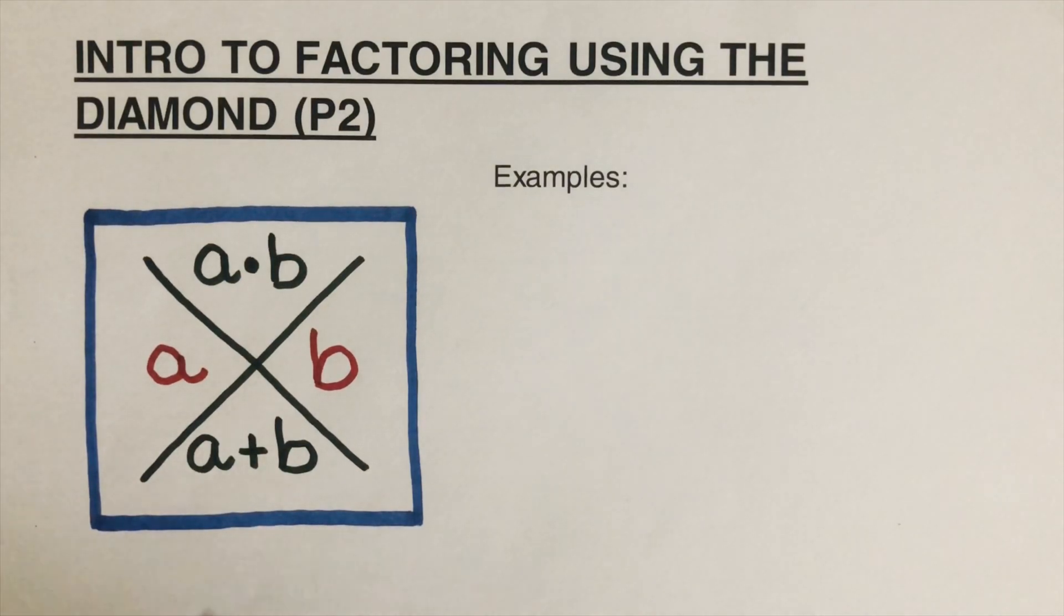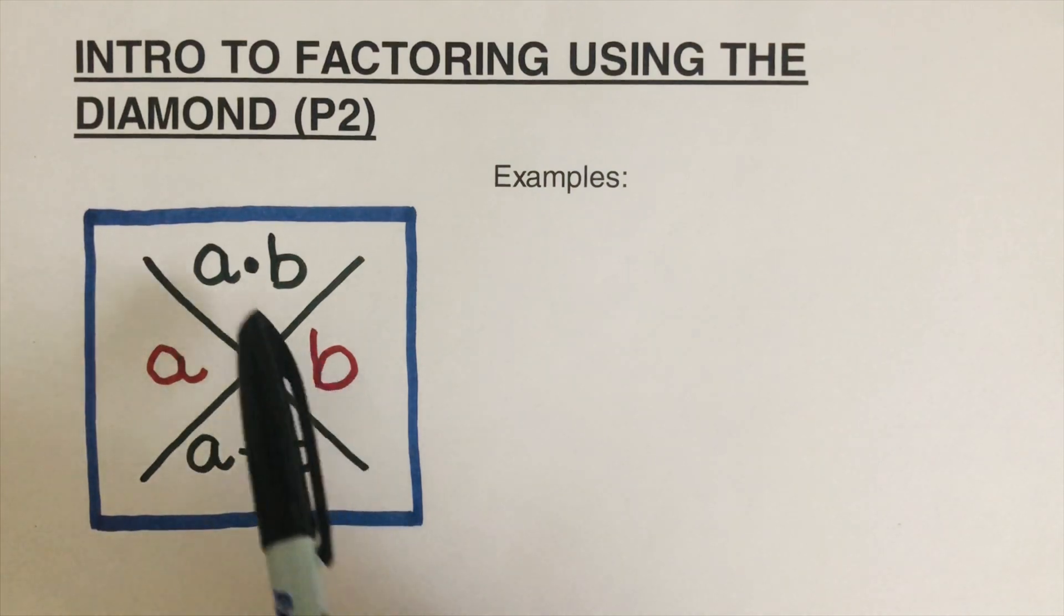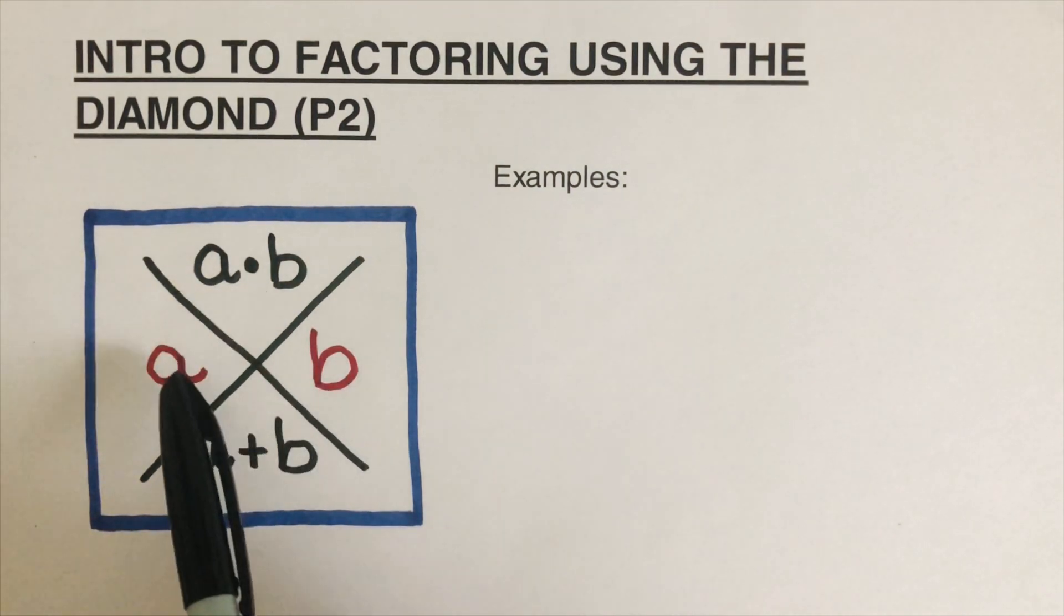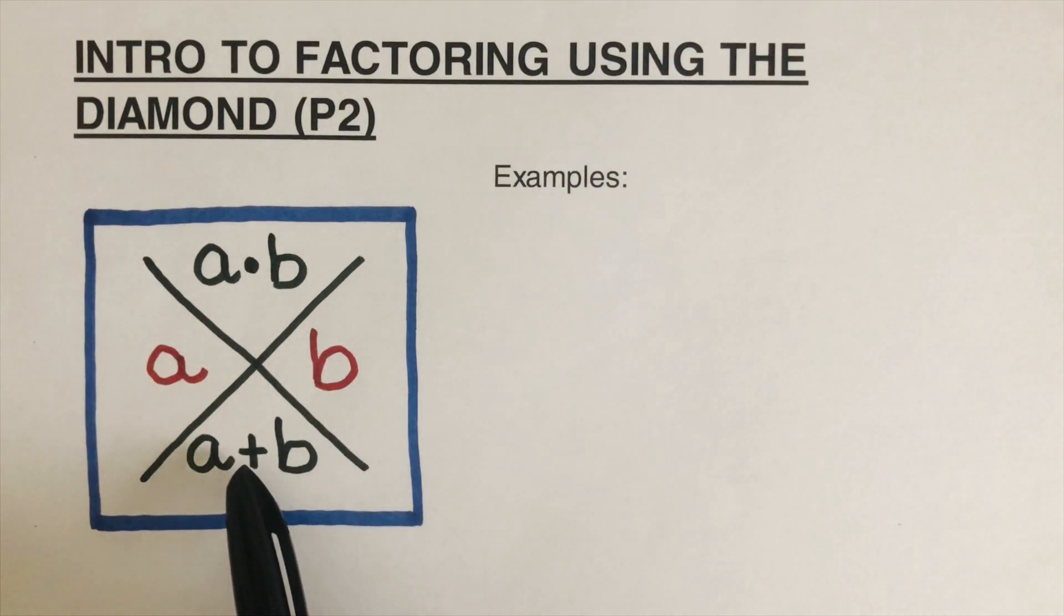So we're talking about the diamond here. This process that we're going to be doing today is needed when we are going to factor quadratic expressions using the box and diamond. So we are doing the diamond part. In this diamond, we have A and B in red are the factors. So that means if these factors are multiplied together, that's the number that we write on top. And then if we add these together, that's the one that we write at the bottom of the diamond. Now let's have an example to better understand what this is.